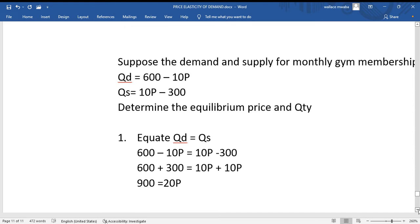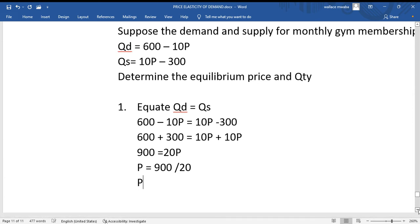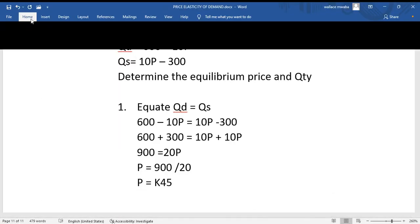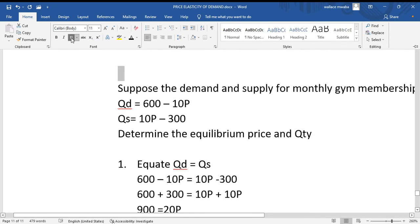So to find the value of P we're just going to divide both sides by 20. So P is going to be equal to 900 divided by 20, and 900 divided by 20 gives us 45 Kwacha. That's the equilibrium price. This is what people are paying for their membership and this is the amount also the gym is receiving.